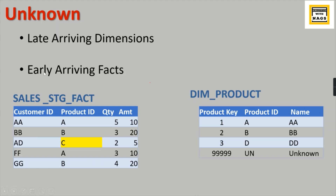This is how your fact table will get all the product keys without any null values. This is what late arriving dimensions or early arriving facts means. The unknown member is the dimension member which will arrive late, but this fact entry has arrived early — so that is what a late arriving dimension or early arriving fact entry means.